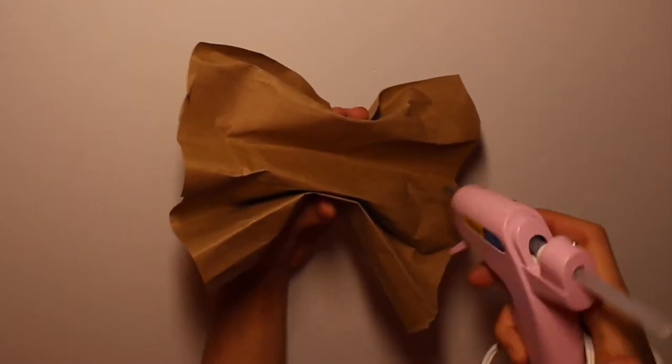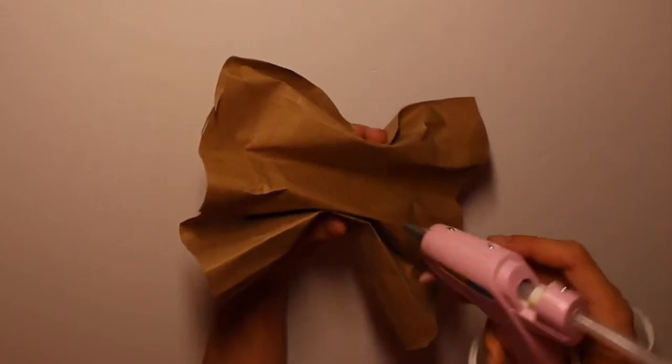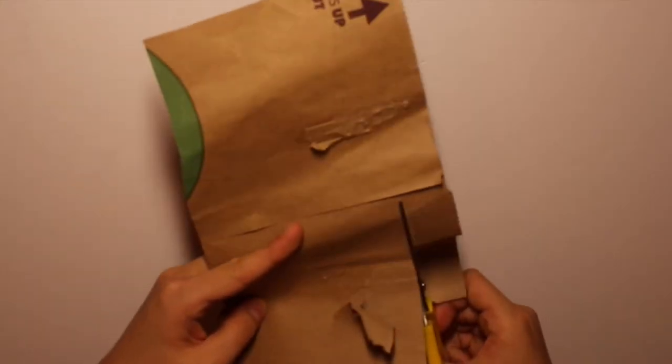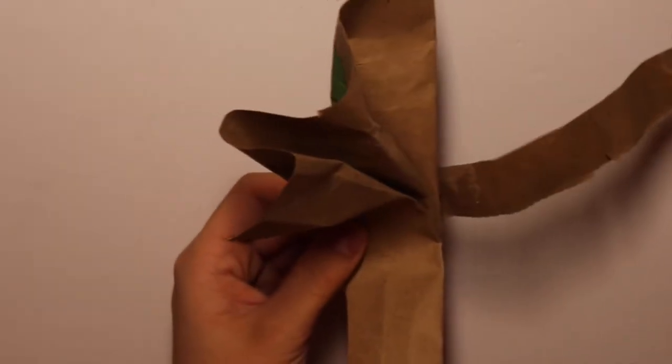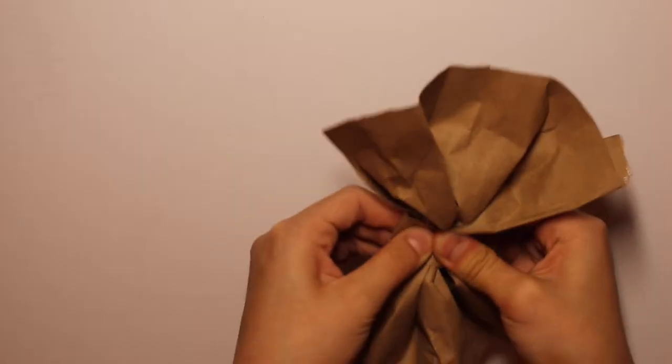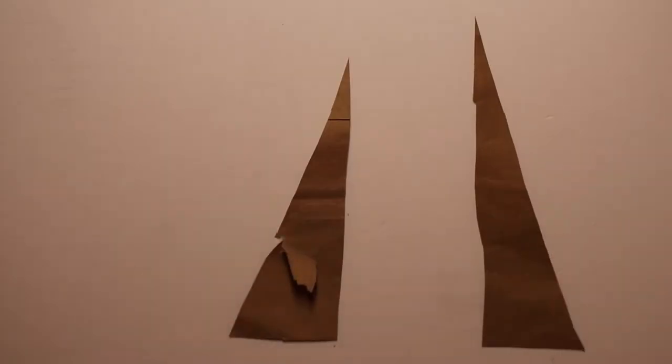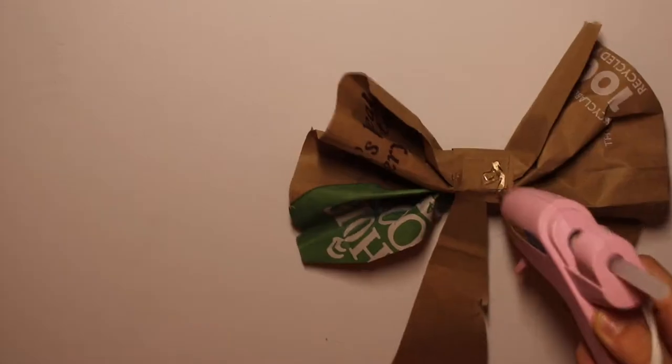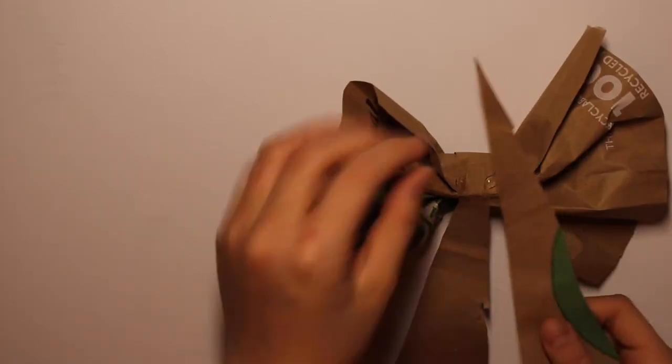And now glue the sections that don't stick together so it's more secure. And then cut a strip of the paper bag and just wrap it around the middle of the bow. Now you're going to want to press it flat and take two strips of your paper bag and then glue them to your bow.